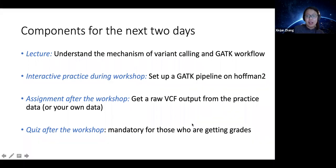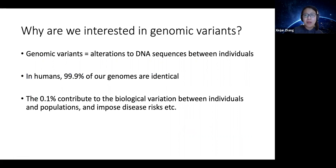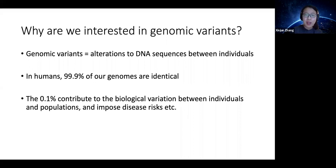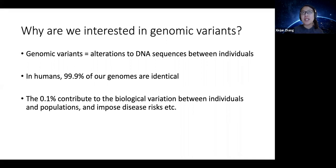Now let's start with the basics of genomic variants. From what I understand, all of you have taken an NGS workshop before, so you should know how a FASTQ file looks and maybe even a BAM file. Those files cover information for the entire genome. For humans, our genome is about three gigabases in size — that's a lot of information — and if we have several individuals, we're talking about a lot of disk storage.